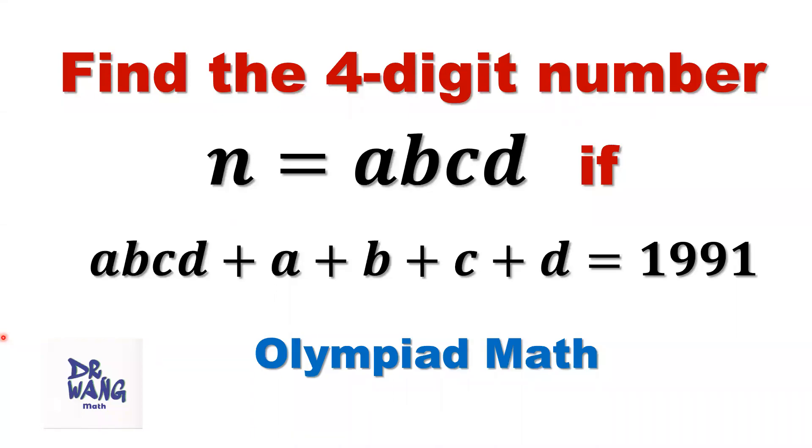Hello, everyone. I'm Dr. Wen. Here is the question. N is a four-digit number equals A, B, C, D. If the following condition is true, this number plus the sum of its digits equals 1991, can you find this number? That means can you find what are A, B, C, and D?